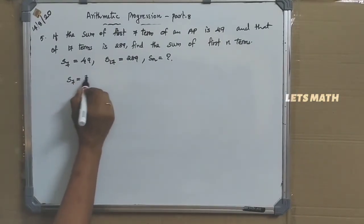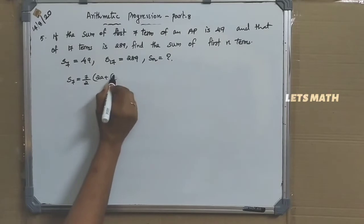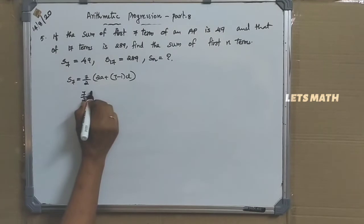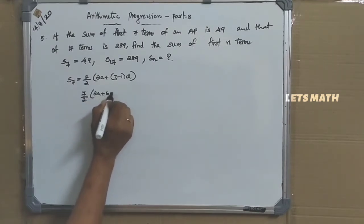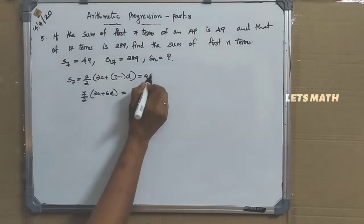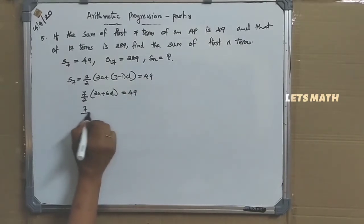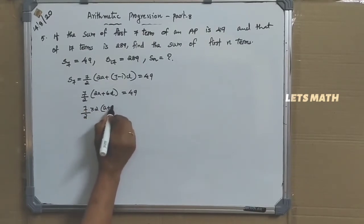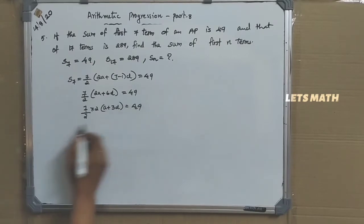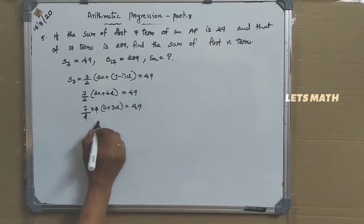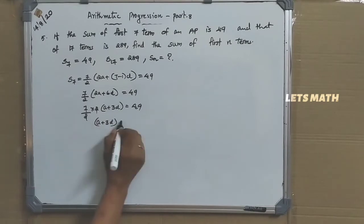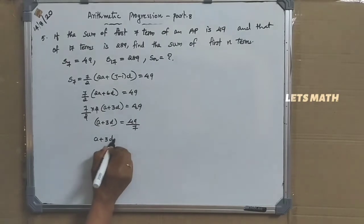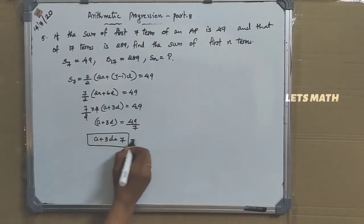S7 equals 7 by 2 into 2A plus 6D equal to 49. Taking 2 common: 7 into A plus 3D equal to 49. Dividing by 7, we get A plus 3D equal to 7. This is equation number 1.